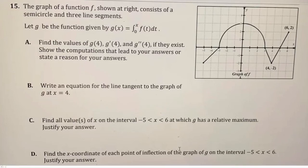We're given a graph of f, and g of x is the integral from 0 to x of f of t dt. So in other words, g prime of x will be f of x, and g double prime of x will be f prime of x. So that's going to help us for part a.